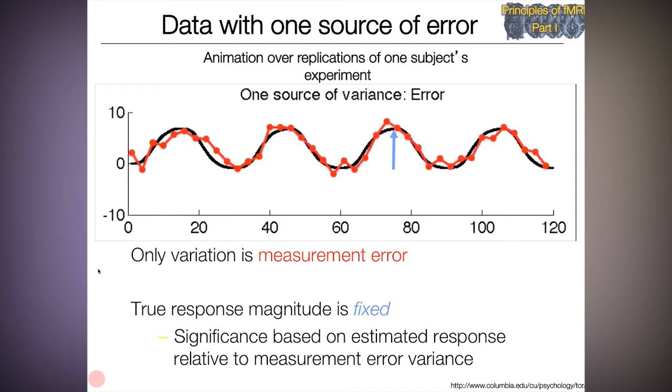So in this case, the significance test would be based on the estimated response relative to the measurement error variance, that variation around the black line in the red. That's only within subject's noise.